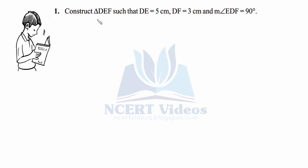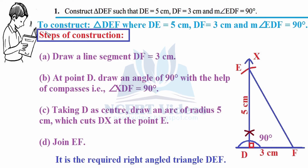Question number one: construct triangle DEF such that DE measures 5 cm, DF equals 3 cm, and the measure of angle EDF equals 90 degrees. The aim of our construction is to construct triangle DEF where DE equals 5 cm and DF measures 3 cm.